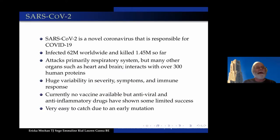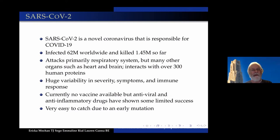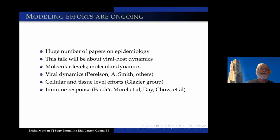I'll skip through all this background because you guys all know this already. It's a novel coronavirus, infected 62 million worldwide. This is a couple months ago, so it's killed a lot more by now. It attacks primarily the respiratory system, but there's lots of other things it also attacks — huge variability in severity. There is a vaccine available, just not widely available right now, and it's very easy to catch, even easier now due to another mutation.